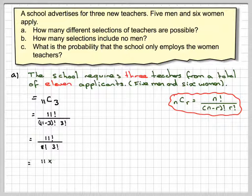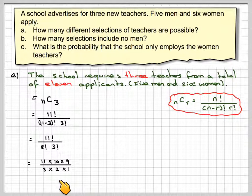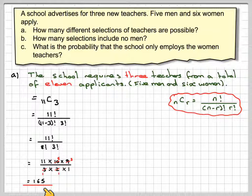So on the top we're going to have 11 times 10 times 9. That will cancel out with the 8 factorial. And on the denominator we're going to have 3 times 2 times 1. The 3 and the 9 will cancel, and the 2 and the 10 will cancel. So we've got 3 times 5 times 11, which gives me 165 different selections.